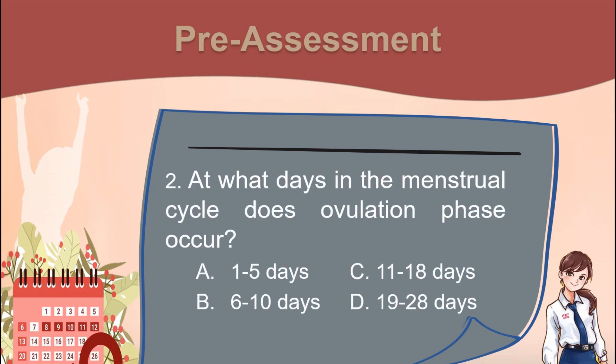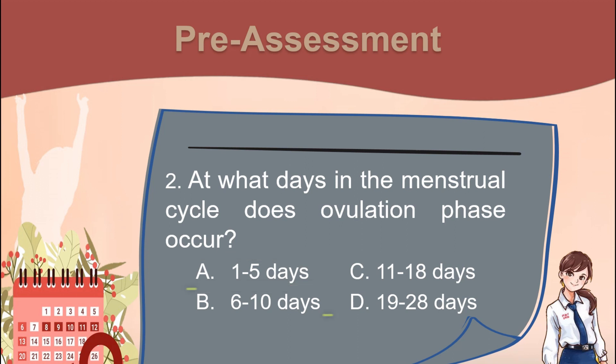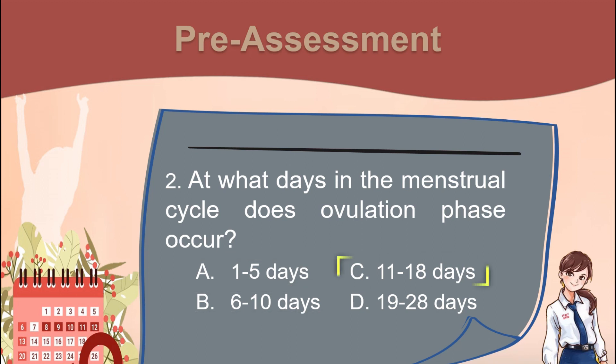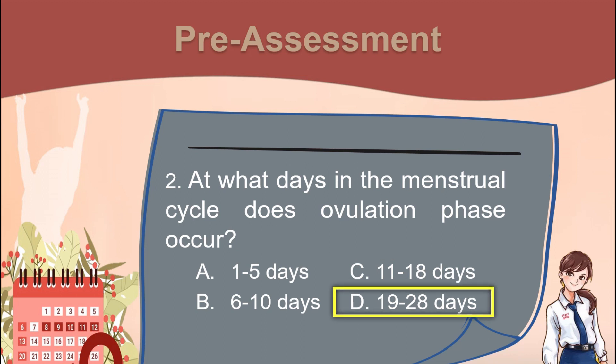Number 2. At what days in the menstrual cycle does the ovulation phase occur? A. 1–5 days. B. 6–10 days. C. 11–18 days. D. 19–28 days.